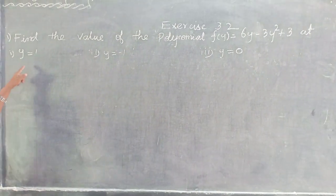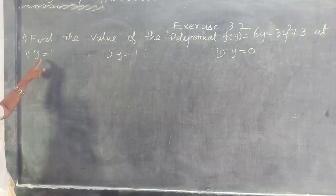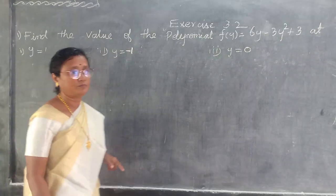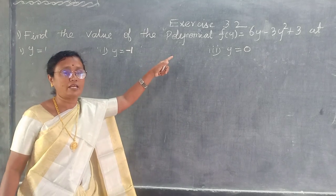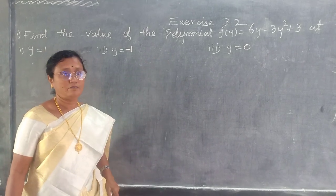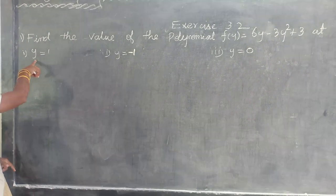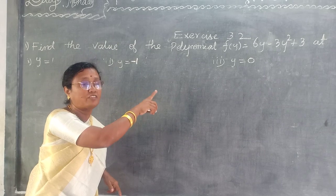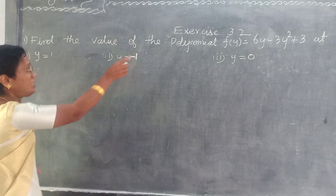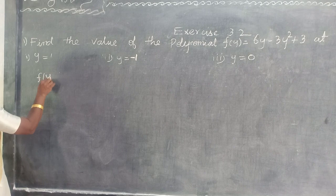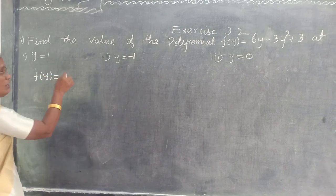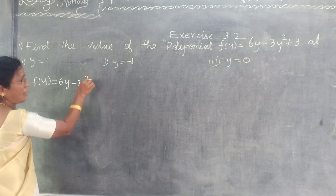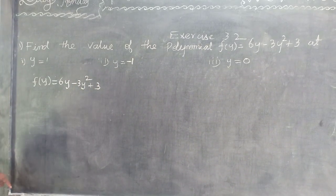What are the values they have given? You can get the value of 6y minus 3y squared plus 3. What is the variable they have chosen here? Y. So in the place of y, you are going to substitute the value and find out the value of the polynomial.